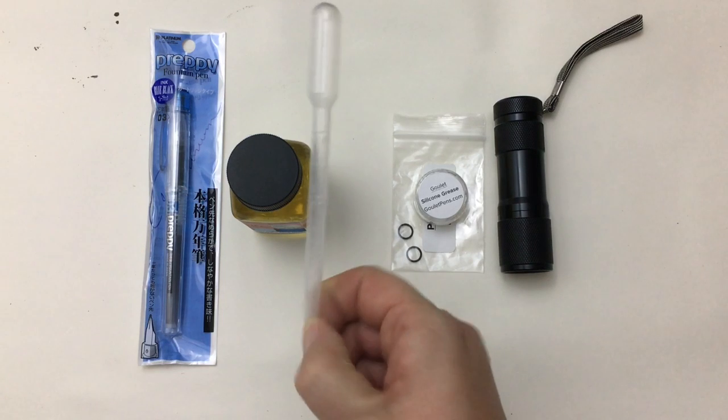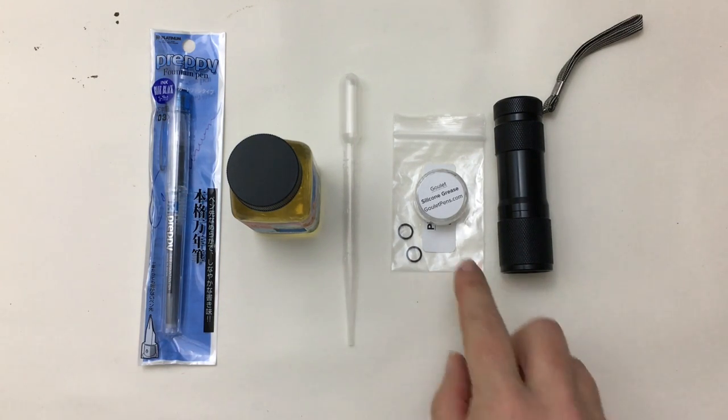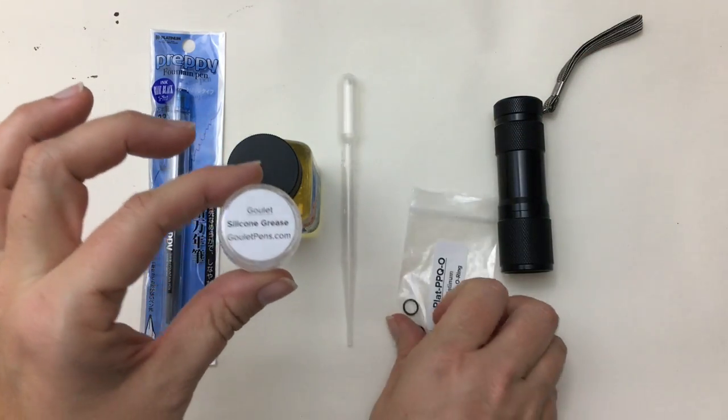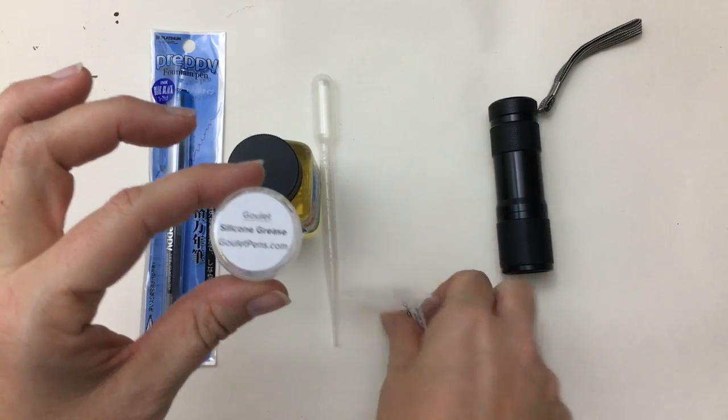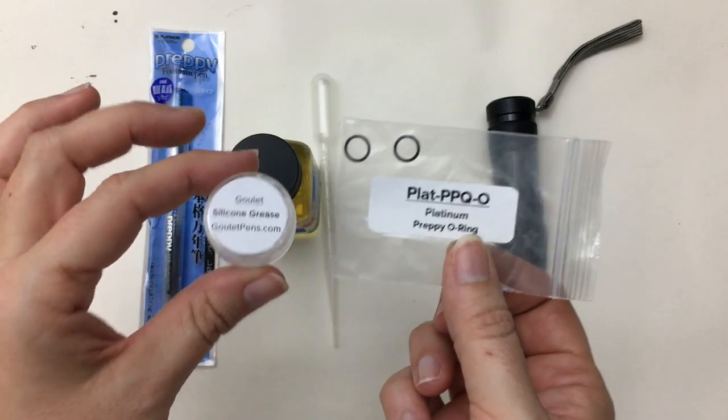You'll need a pipette. I have a ton of these in bulk because I do workshops from Goulet Pens. You'll need some silicon grease and an O-ring and they have this on their website. It's very, very affordable.